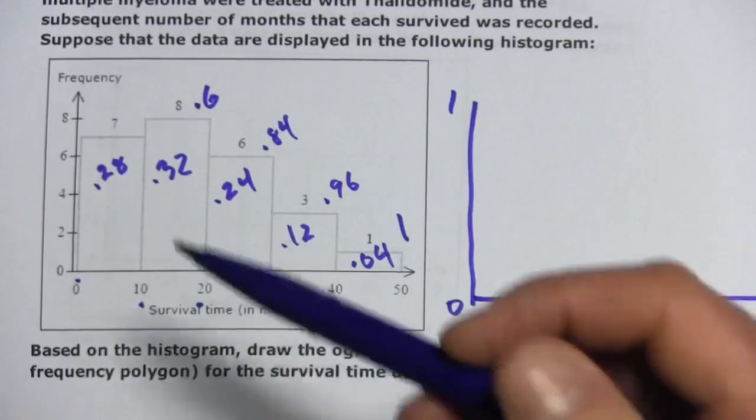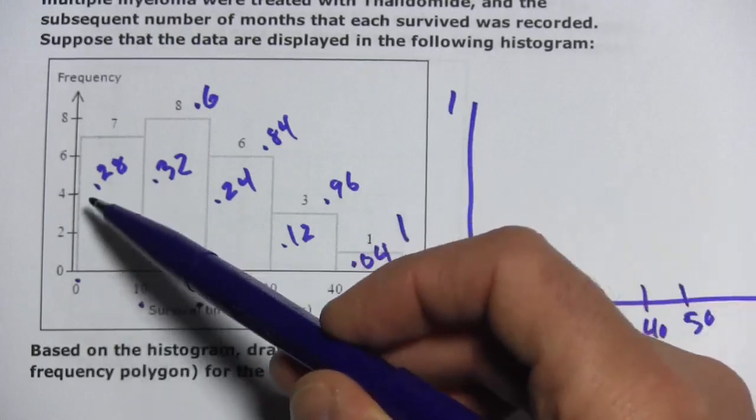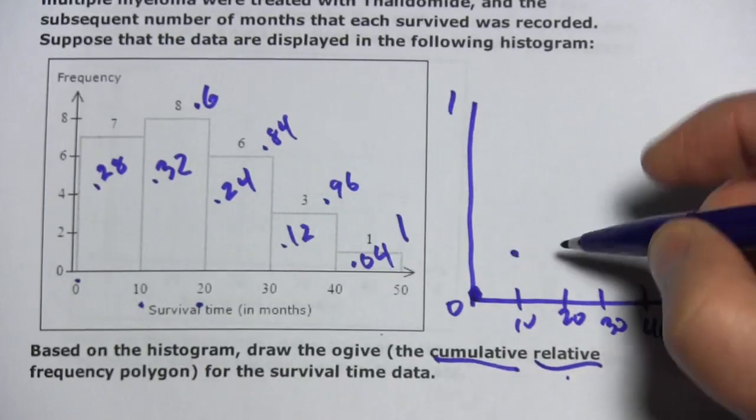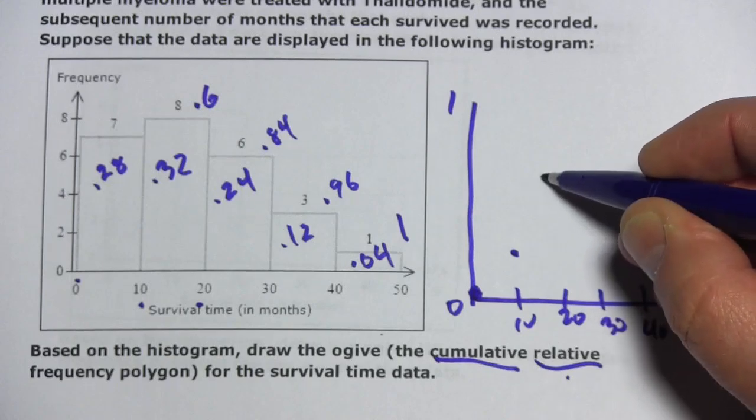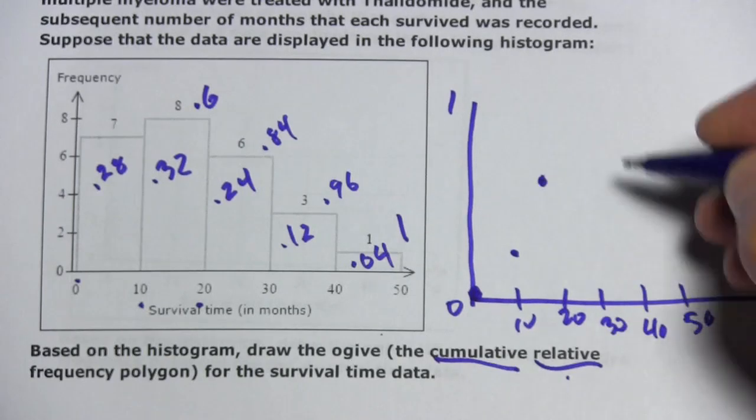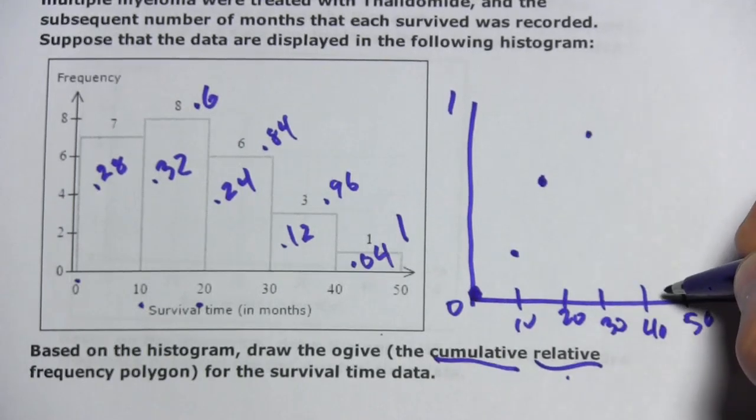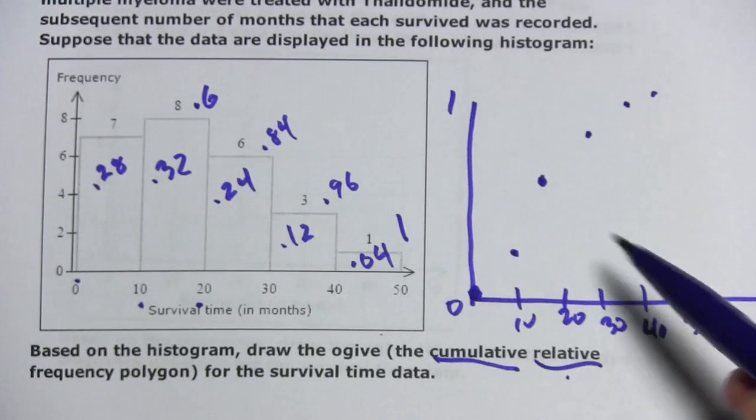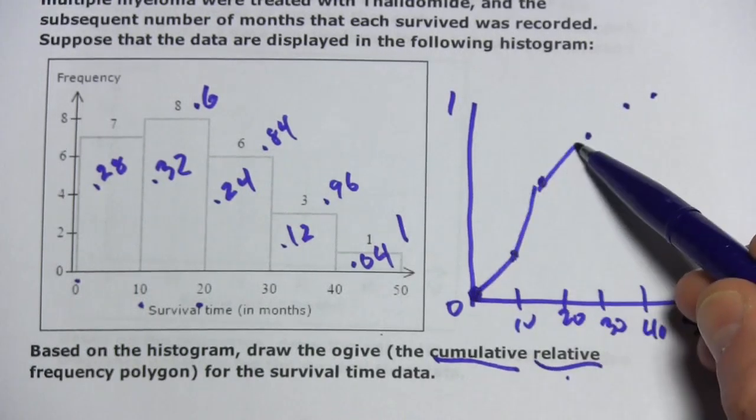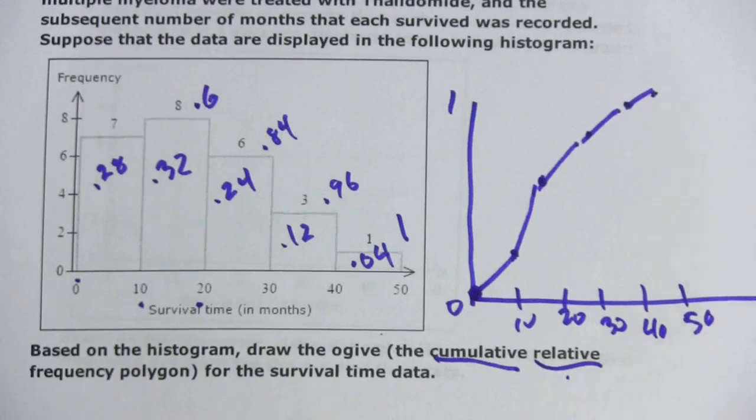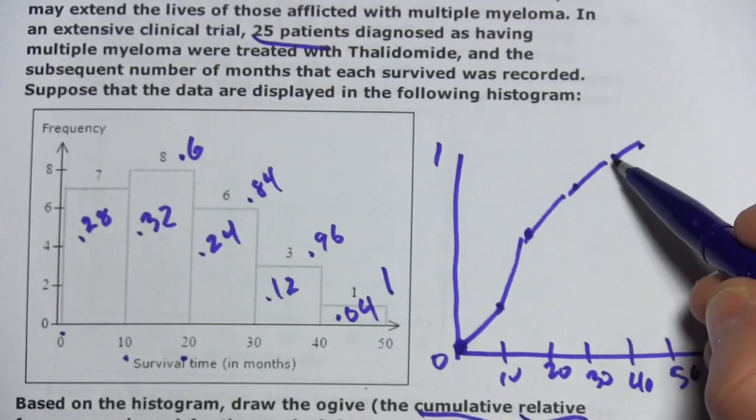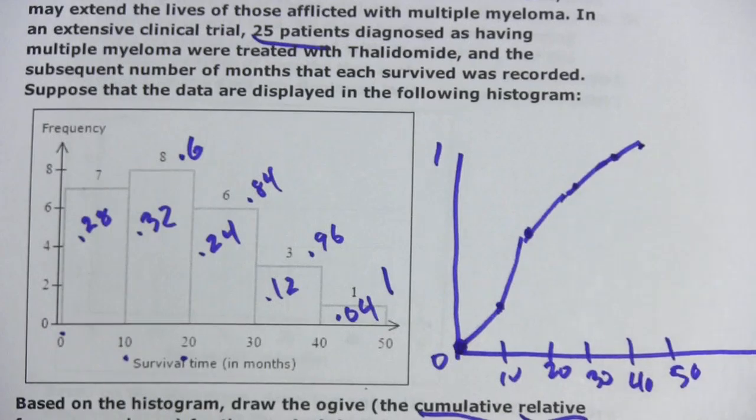And then we'll just plot these points. 0, 0. And then by 10, we're at 0.28. And by 20, we're at 0.6. And by 30, 0.84. And 40, 0.96. And 50, we're at 1. And then we connect the dots. And we have our cumulative relative frequency polygon or our ogive for this problem.